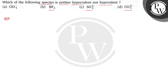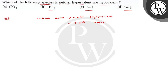As we know, hypervalent and hypovalent species — what are they? Those species in which the central atom is having more than 8 electrons are called hypervalent, and those having less than 8 electrons are called hypovalent. So basically, we have to find out in which of the species the central atom is having exactly 8 electrons — it should not be more than 8 or less than 8.